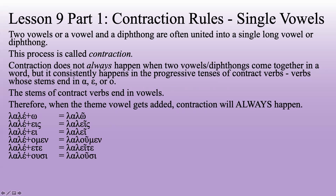This is the kind of thing we're talking about. Take laleo: the stem ends with an epsilon, and the theme vowel is a lengthened omicron — an omega. When the epsilon and omega get stuck next to each other, they don't like to stay there. The two vowels blend together and make just an omega, and you see the circumflex. Not every time there is contraction will there be a circumflex, but anytime you see a circumflex, contraction has happened.